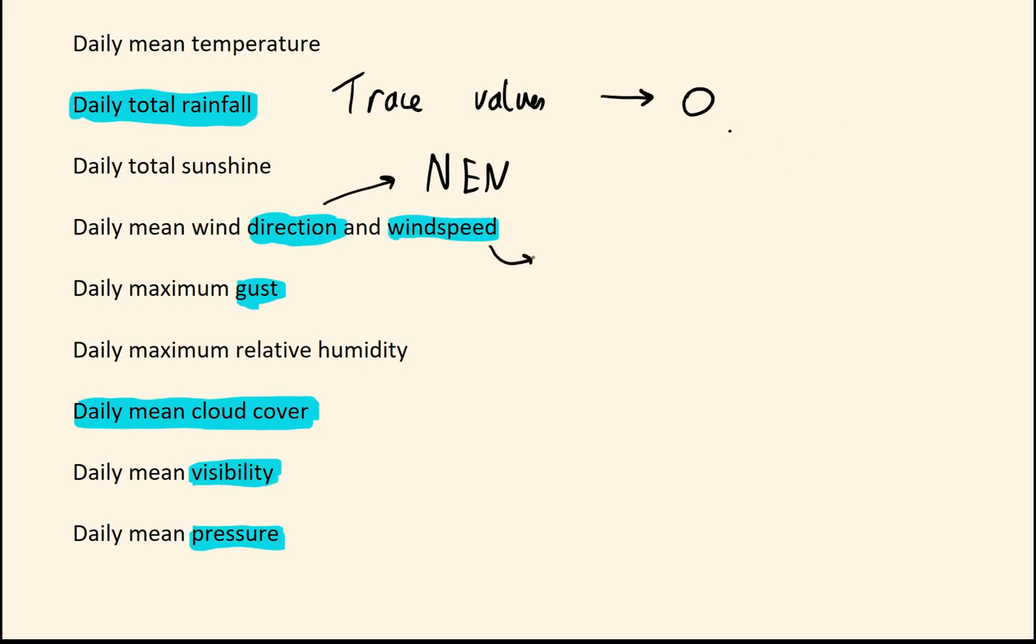Next for wind speed, that is measured in knots. That does occasionally come up. It's basically an old measurement they still use. A maximum gust the same is also measured in knots.